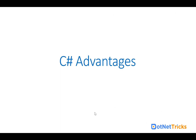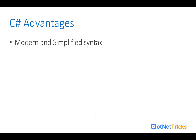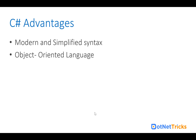Now let's discuss the C# advantages. C# is a modern language and it supports simplified syntax. If you are from a background of C, C++, or Java, you can easily understand it because its syntax is quite similar. It is an object-oriented language, so you can use all the OOP features like inheritance, polymorphism, and abstraction.